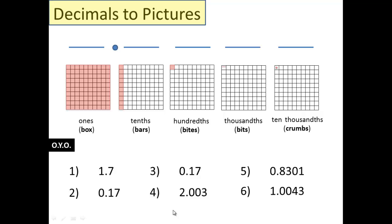On your own, these are your six problems. In your homework, I should have given you blank hundred grids to draw on. Go ahead and do your best. A great strategy is just to label box, bar, bytes, bits, crumbs, and then draw carefully and keep it neat. Thanks for listening.